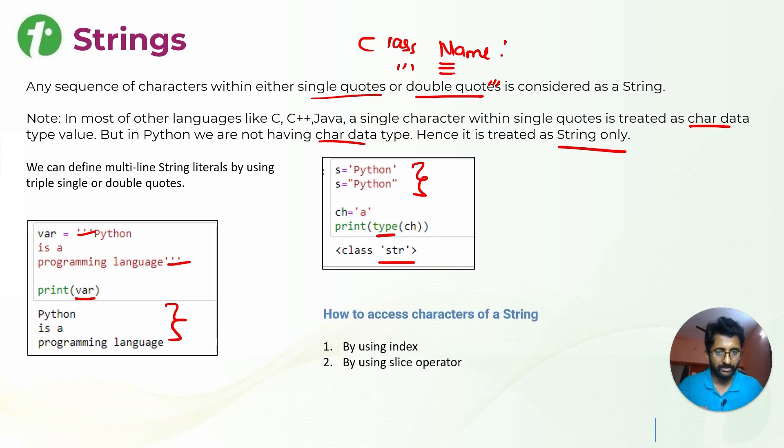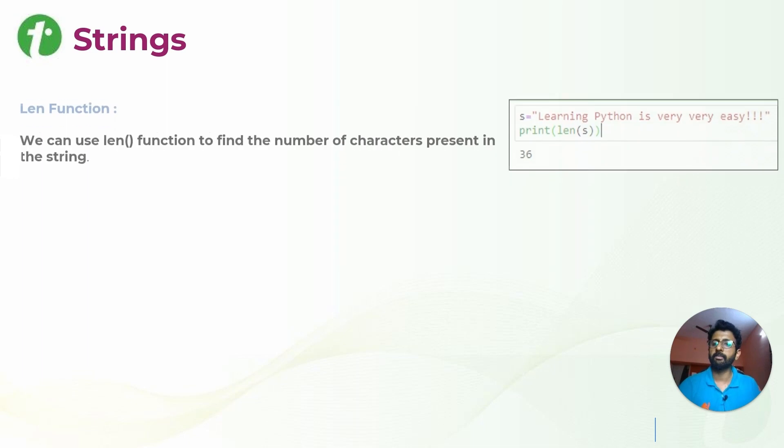How to access the character of string? You can access the characters by using index or by using slice operator. Index means in Python, Python is zero indexed, so first will be zero index. Then slicing operation means 10 to 20 or 1 to 5 accordingly.